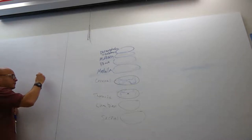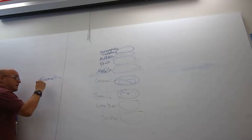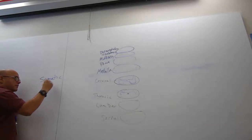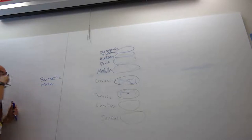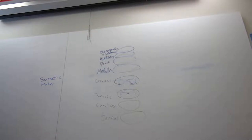You've got somatic motor. If somatic motor is voluntary motor for skeletal muscle, then I have to account for what other muscles? What other muscles are there? Cardiac and smooth.